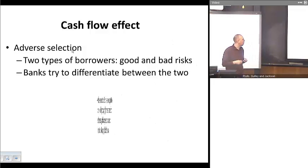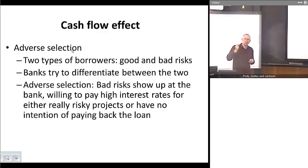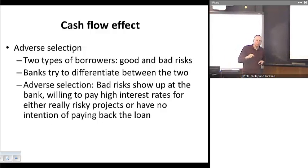But here is a problem you have, however, created is that the bad risks are more likely to be still standing in line. Your good risks have left. Your bad risks are willing to pay those higher interest rates because maybe they have a really risky project that might pay off really big. Maybe you have some people who are a little bit delusional who think maybe they've discovered, for example, a perpetual motion machine and want to borrow money to finance it. Or you have outright crooks who want to borrow money from your bank and simply disappear with it.